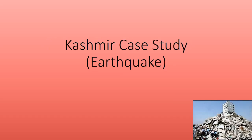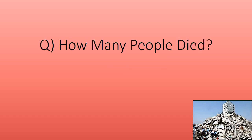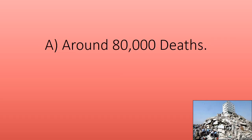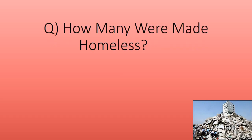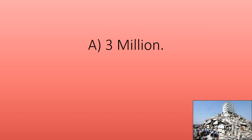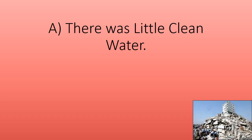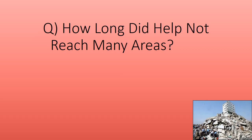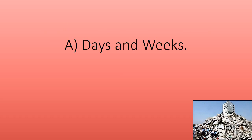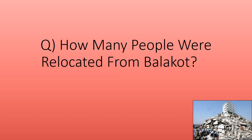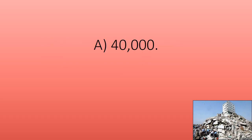Kashmir earthquake case study. How many people died? Around 80,000 deaths. How many were made homeless? Three million. How did diarrhea and other diseases spread? There was little clean water. How long did help not reach many areas? Days and weeks. How many people were relocated from Balakot? 40,000.